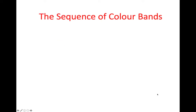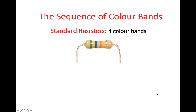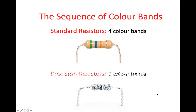Let's look in a little bit more detail about the sequence of the colour bands. On resistors you can have a standard resistor, which would have four colour bands, or you can have precision resistors, which could have five or six colour bands. The example shown here is with five colour bands, but I'll talk about what the sixth colour band means shortly.